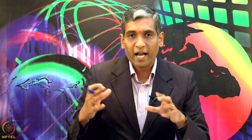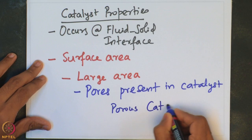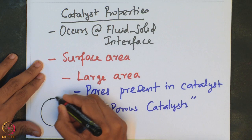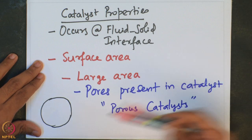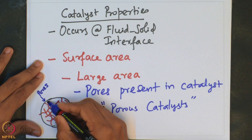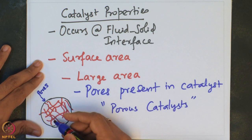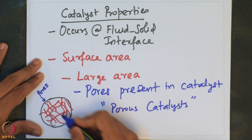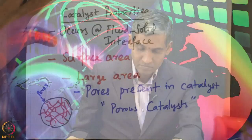There are several pores that may be present in the catalyst, and these pores together actually offer availability of large area in which the reaction can actually happen. Such catalysts are typically called porous catalysts. If we sketch a catalyst, let us assume it is spherical in nature, with many pores present inside. Each of these pores will have surface along the walls where the fluid-solid interface facilitates the chemical reaction.